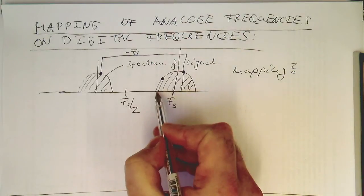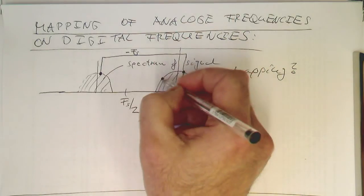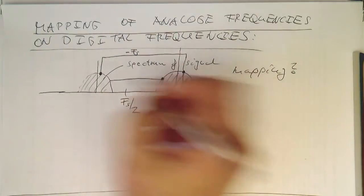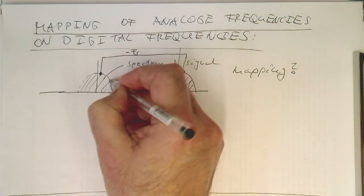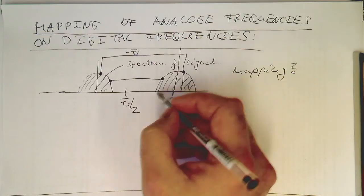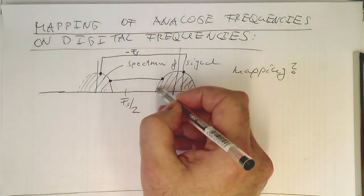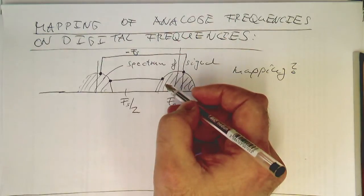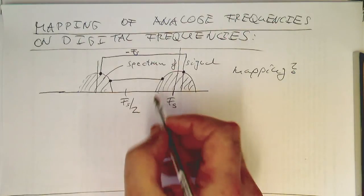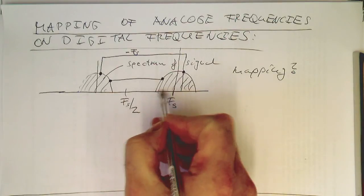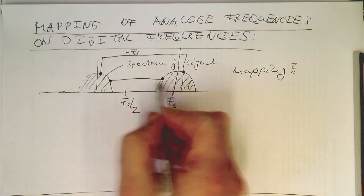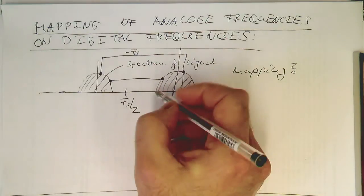So this frequency maps essentially to this point here. And we have a frequency here, this maps to this point here. So this means if we are going up with frequencies here, we are actually going down here on this side.